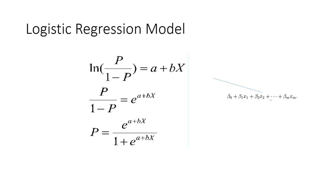How does the model look like — what is its mathematical form? It's the logarithm of P divided by 1 minus P, where P is the probability of happening of an event and 1 minus P is the probability of not happening of that event. If you add the probability of happening and the probability of not happening of an event, it adds up to 1. So the probability of happening of an event is in the numerator, and in the denominator, the probability of not happening of an event — and this equals a linear combination of your independent variables.